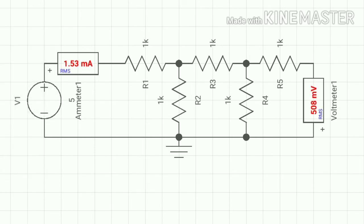You can see in the diagram the ammeter reading is 3mA and the voltmeter reading, meaning the voltage V2, is 1V.